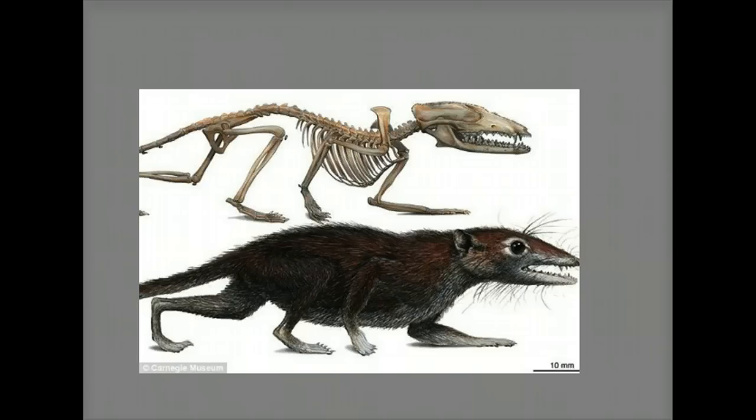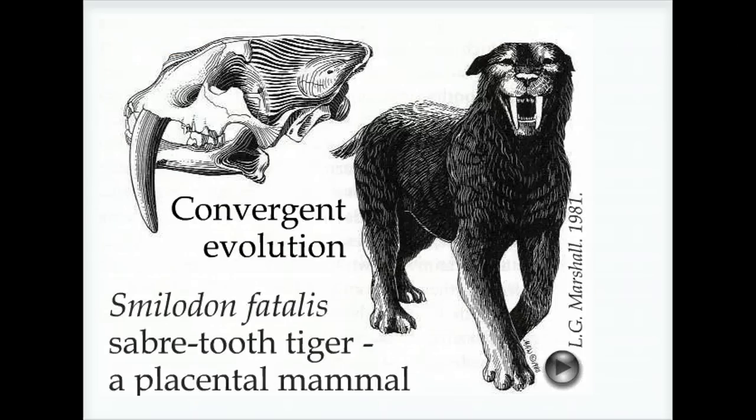Two branches of mammals, the marsupials and the placentals, have developed large cat-like predators. One obvious way for a predator to catch, hold, and kill their prey is by using dagger-like teeth. In the placental mammals, an extreme example is the saber-toothed cat, Smilodon fatalis.